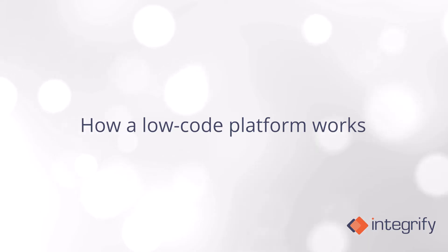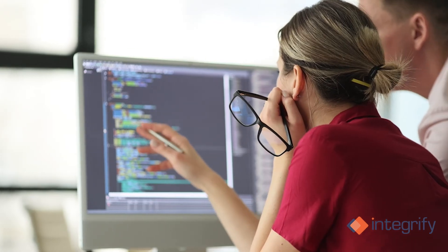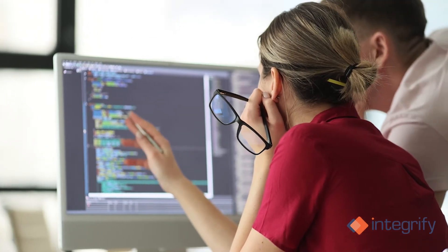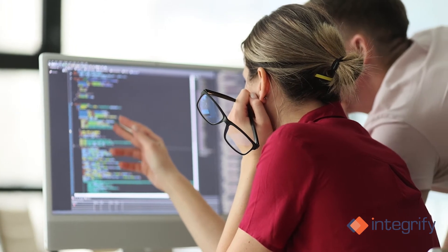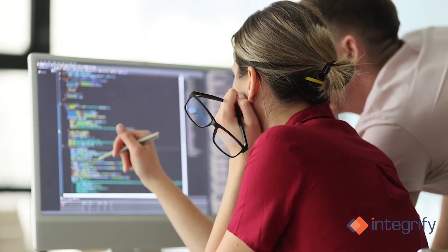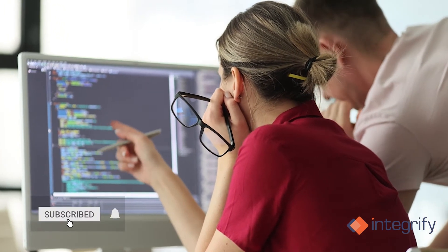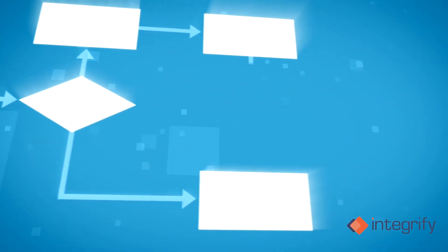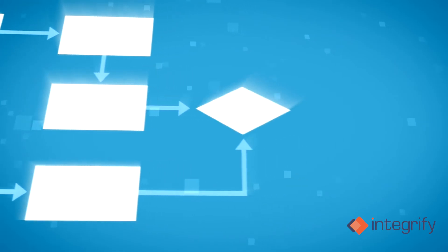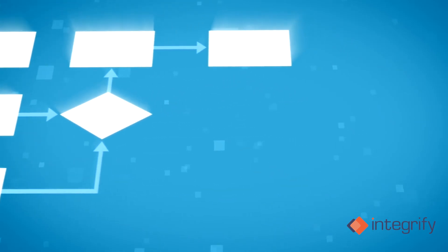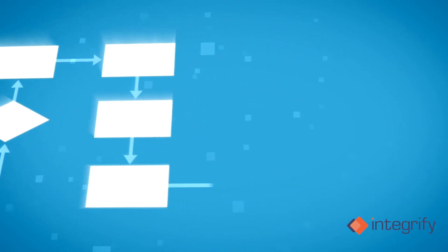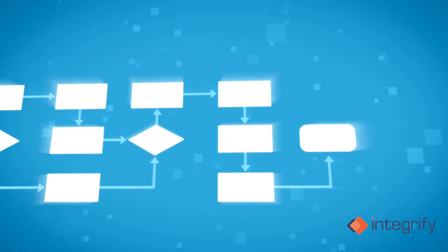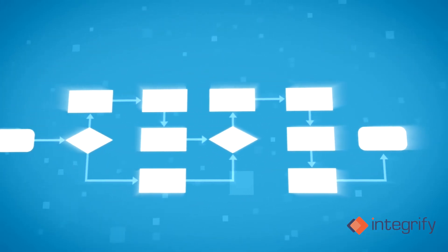Now let's go over how a low-code platform works. Programmers who work in traditional software development typically write lines of code in their chosen programming language that outlines the functions and features requested via business requirements. With low-code app development, all that happens behind the scenes. Low-code platforms let users visually select and lay out components representing different functions or capabilities. This can include web interfaces, forms, and workflows.